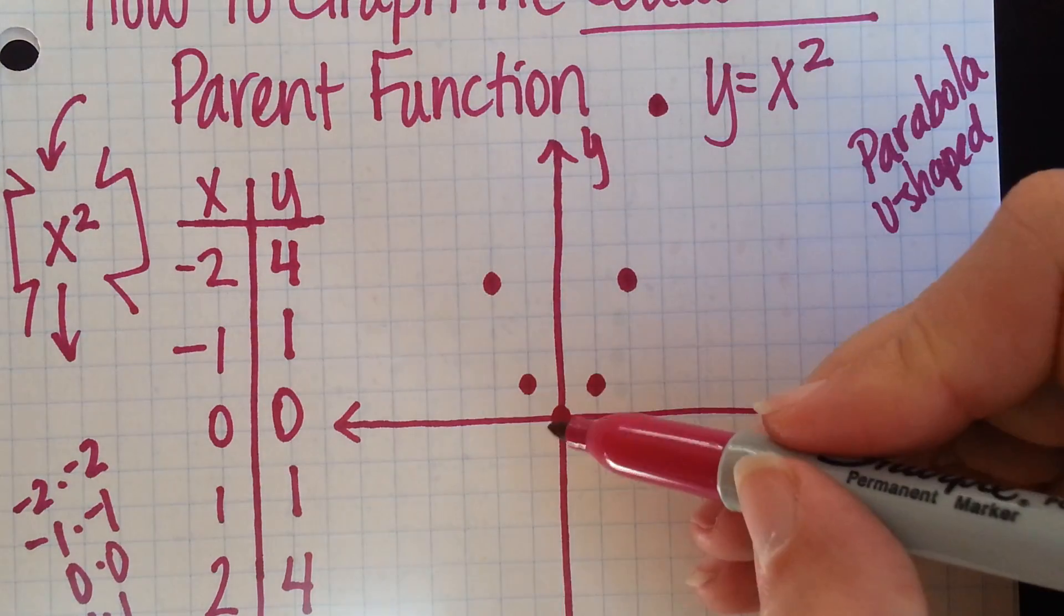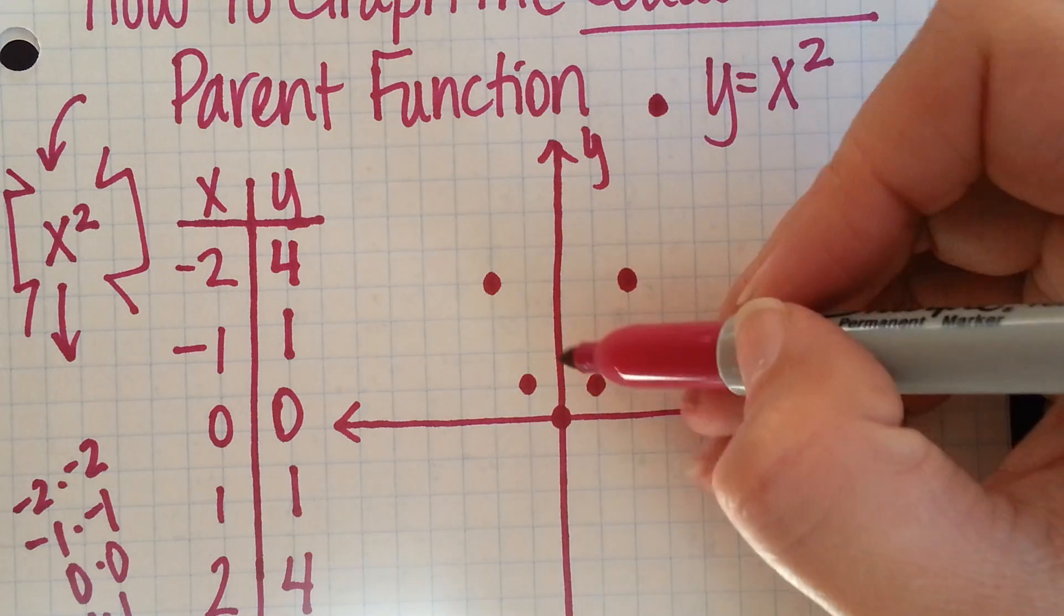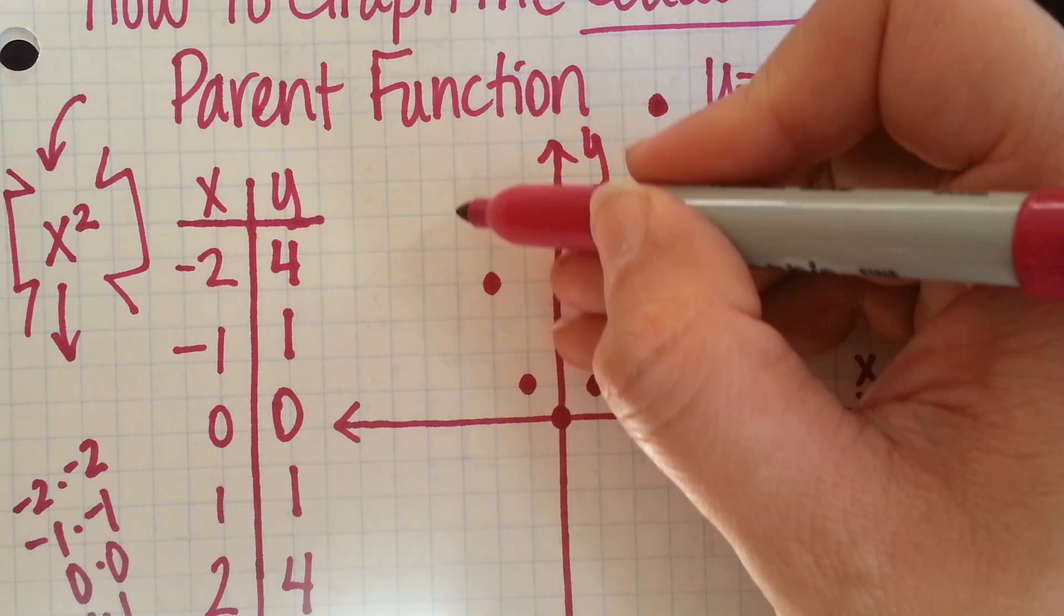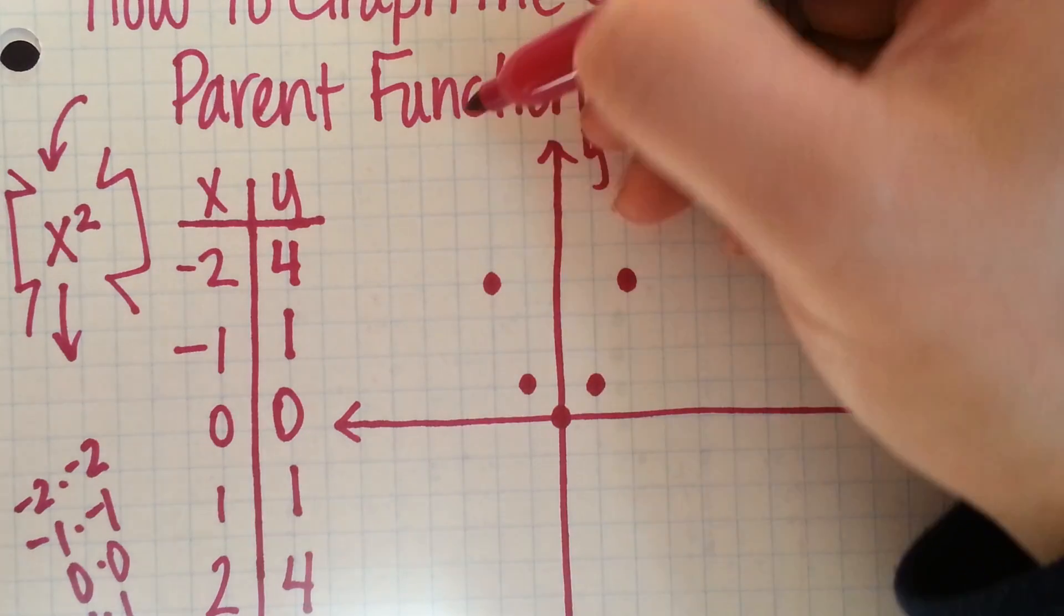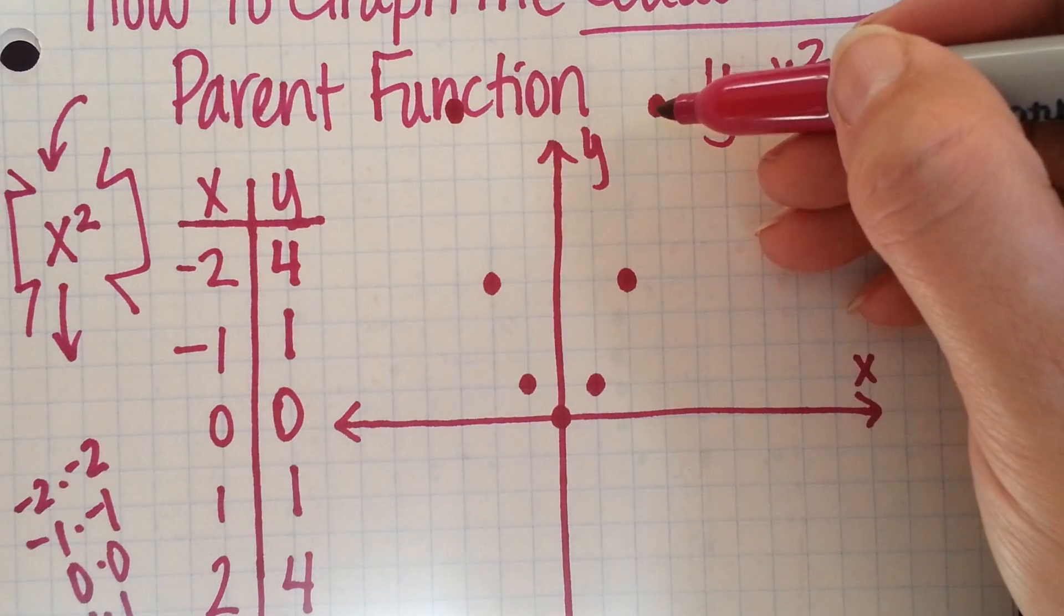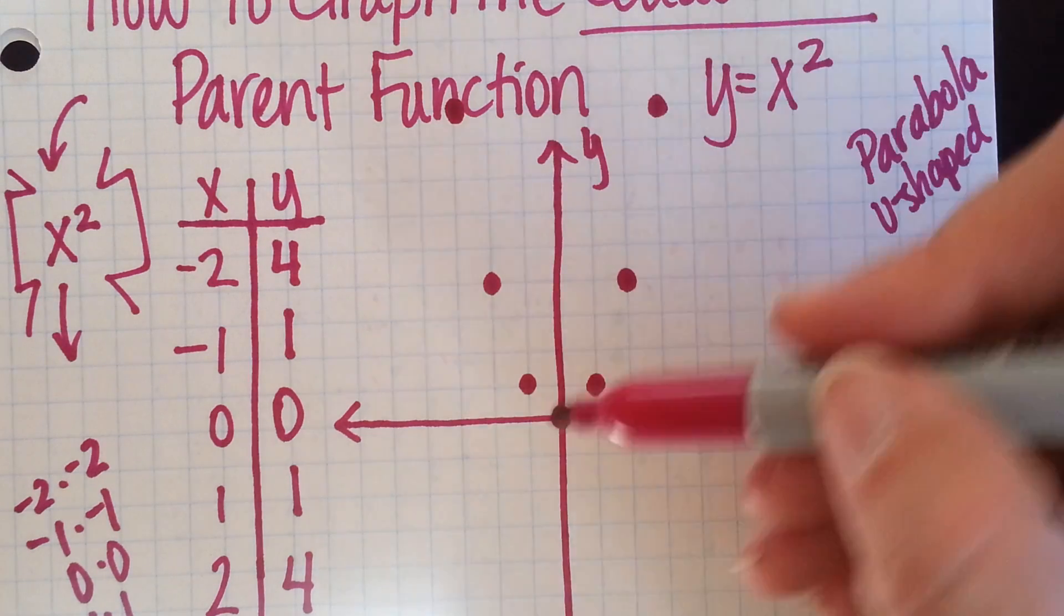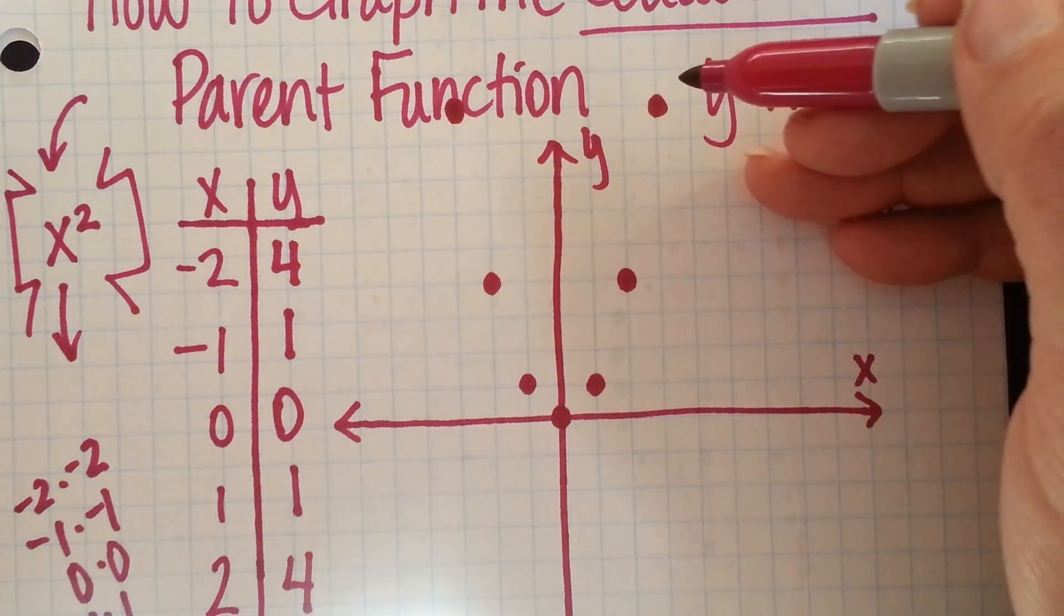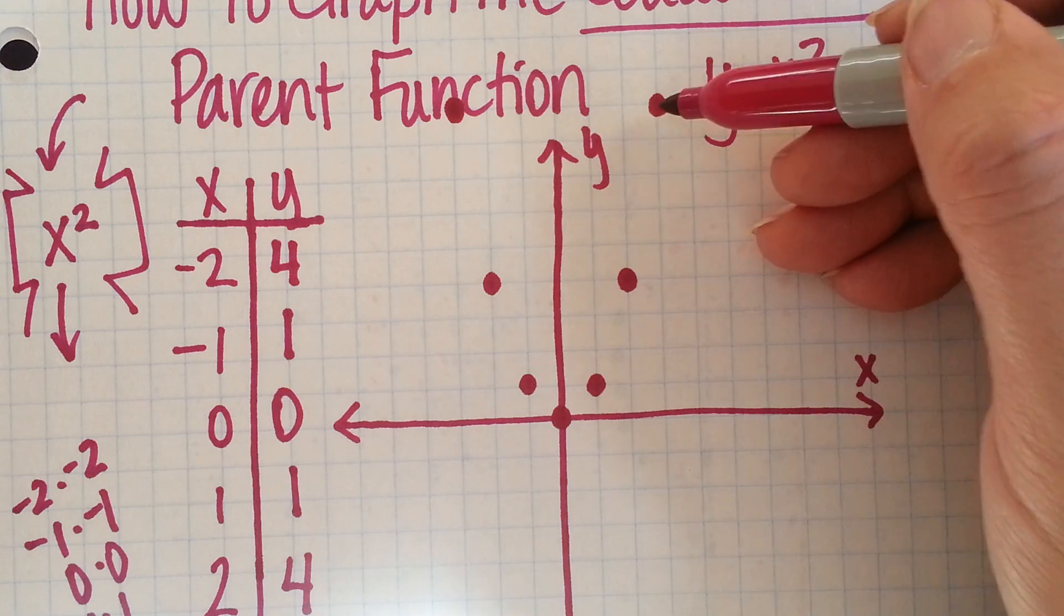If you haven't started to see it yet, you might notice that this side and this side are going to be symmetrical, which means if I went to negative 3 and squared it, I would have a point right up here that would be symmetric to the other point I drew. So, if I went 1, 2, 3, and up 9, I'd be at the same place as I am on the right side.